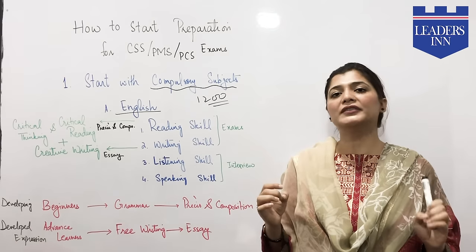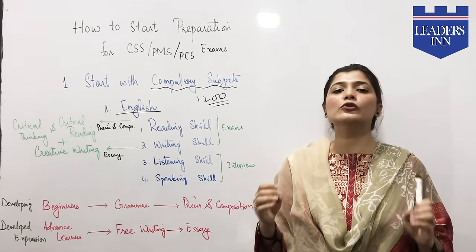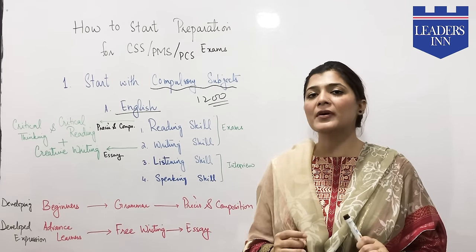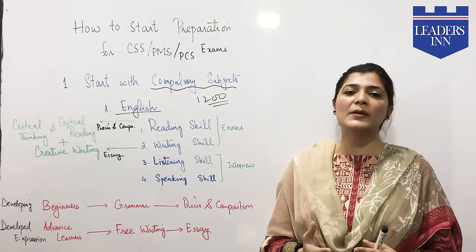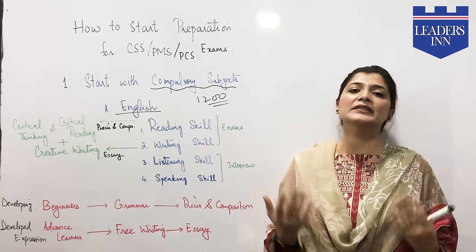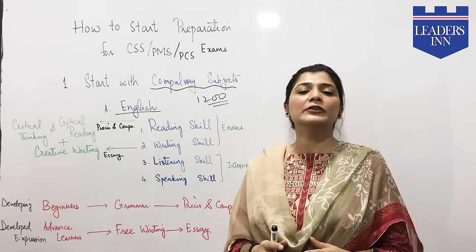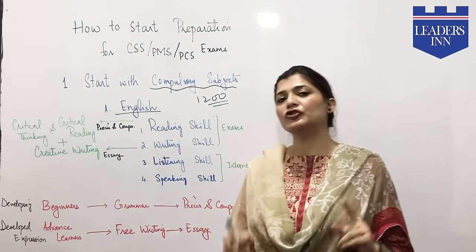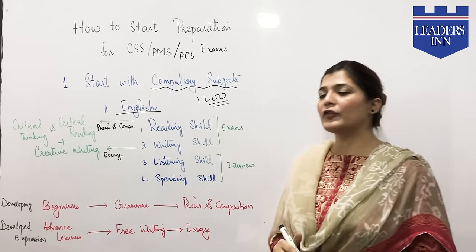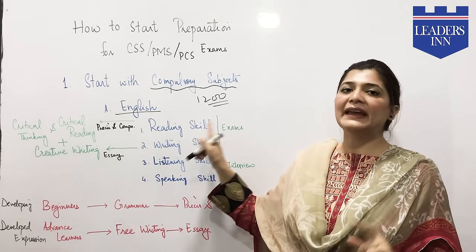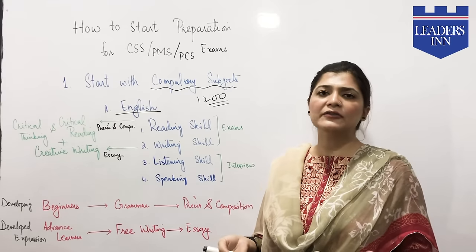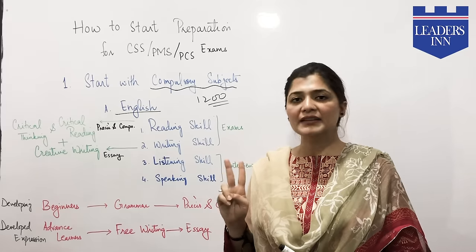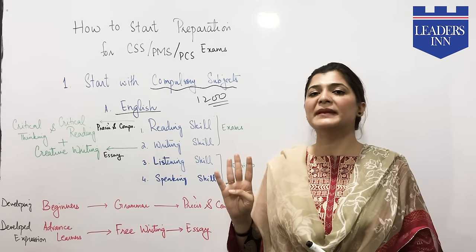There are 200 marks for English, which covers almost everything you can expect in an English paper. In English, you have four basic skills: reading skills, writing skills, listening skills, and speaking skills. Your written exam focuses on reading skills and writing skills.